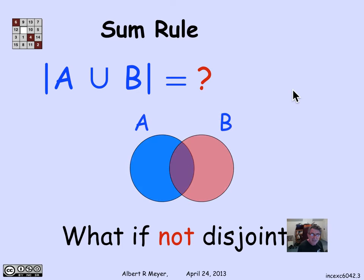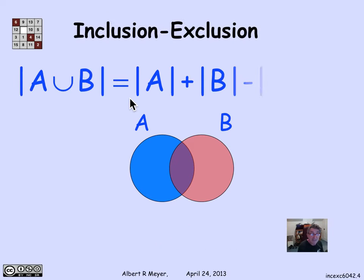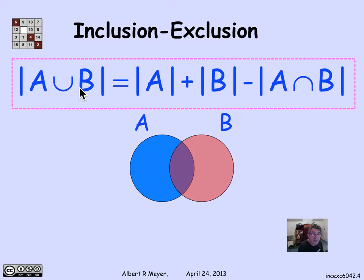But what if they're not disjoint? Suppose that A and B overlap and there's some stuff in the intersection of A and B where there are points in common. What then is the size of A union B? The answer is that the size of A union B is the size of A plus the size of B minus the size of A intersection B.